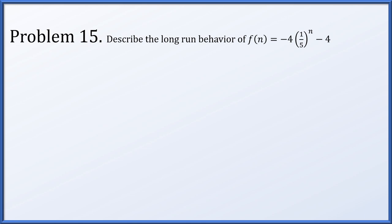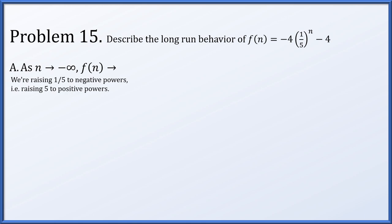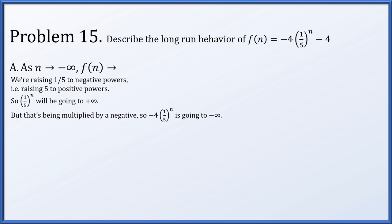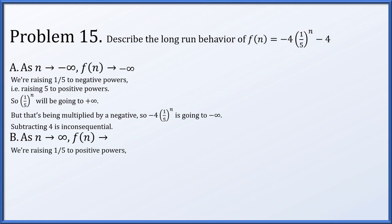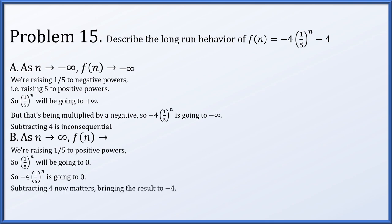Problem 15: describe the long-run behavior of f(n) = -4·(1/5)^n - 4. As n goes to negative infinity, we raise 1/5 to large negative powers, which equals raising 5 to large positive powers, going to positive infinity. Multiplied by -4, the term goes to negative infinity, and subtracting 4 is inconsequential — so f(n) goes to negative infinity. As n goes to positive infinity, (1/5)^n collapses to 0, multiplied by -4 is still 0, but subtracting 4 gives a limit of -4. So f(n) goes to -4.